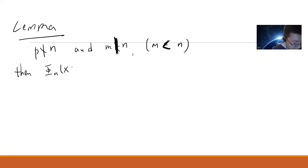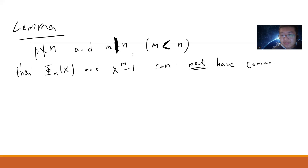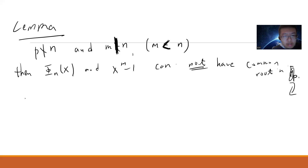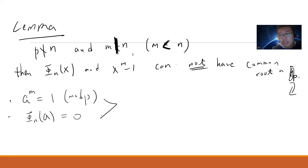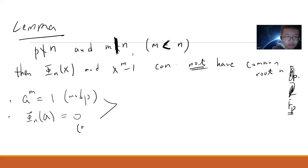You will find an x such that x^n - 1 cannot have common roots — in F_p. So basically, what I'm saying is: if you have this property, then these two conditions cannot simultaneously hold: one is a^m ≡ 1 mod p, and the other is φ_n(a) ≡ 0 mod p. These two cannot happen simultaneously.